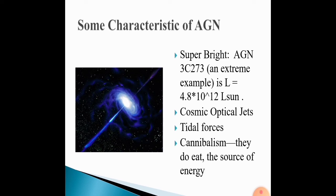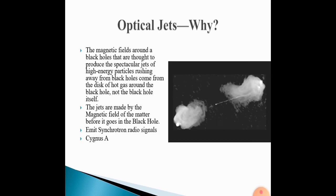Some characteristics of AGN: super-bright, cosmic optical jets, tidal forces, cannibalism. The magnetic fields around black holes that are thought to produce the spectacular jets of high-speed particles rushing away from black holes come from the disk of hot gas around the black hole, not the black hole itself. The jets are made by the magnetic field of matter before it goes in the black hole, emit radio signals.